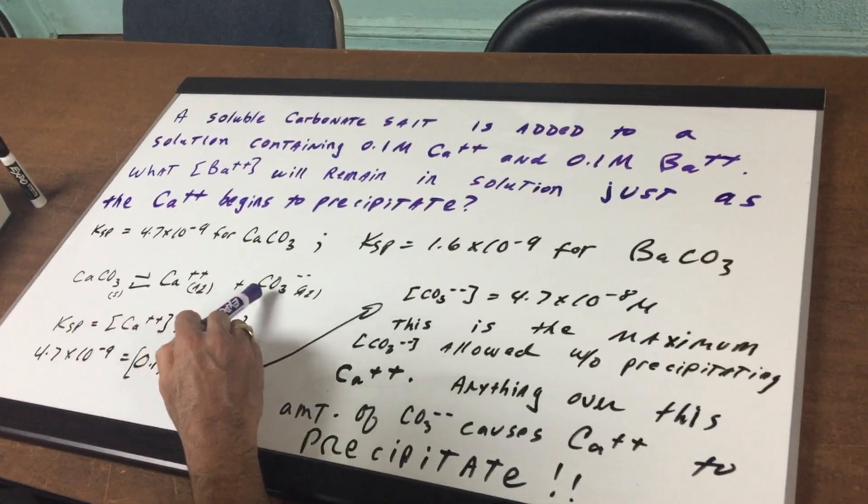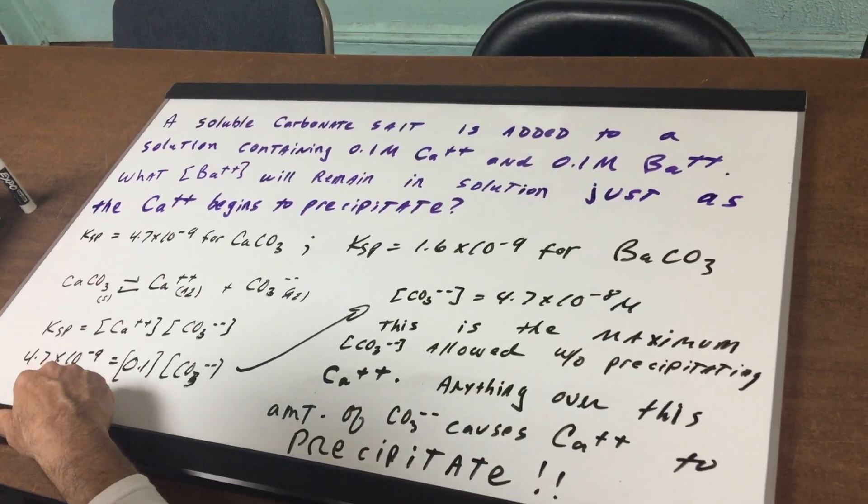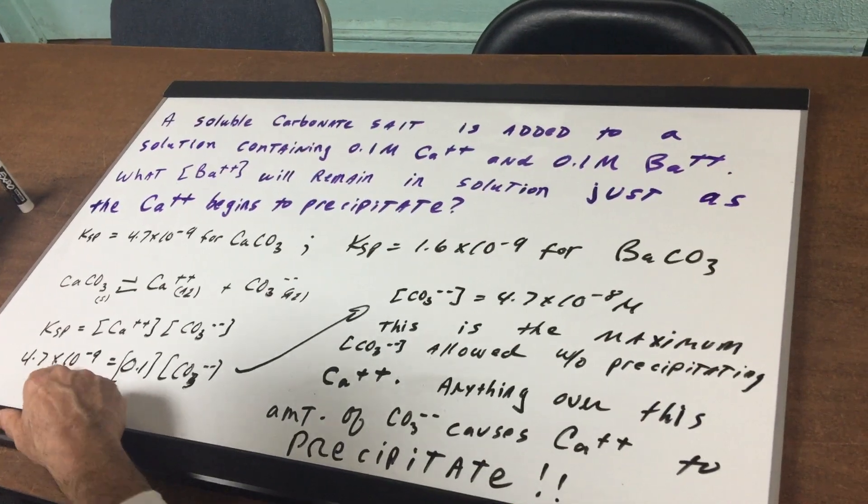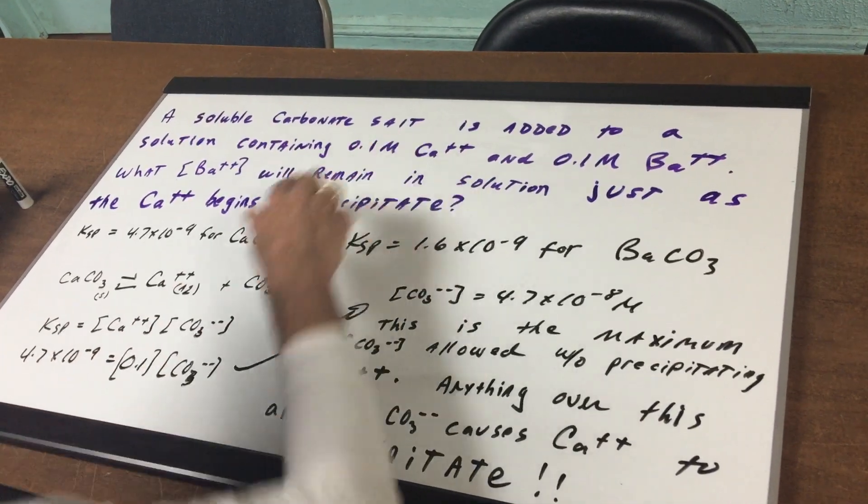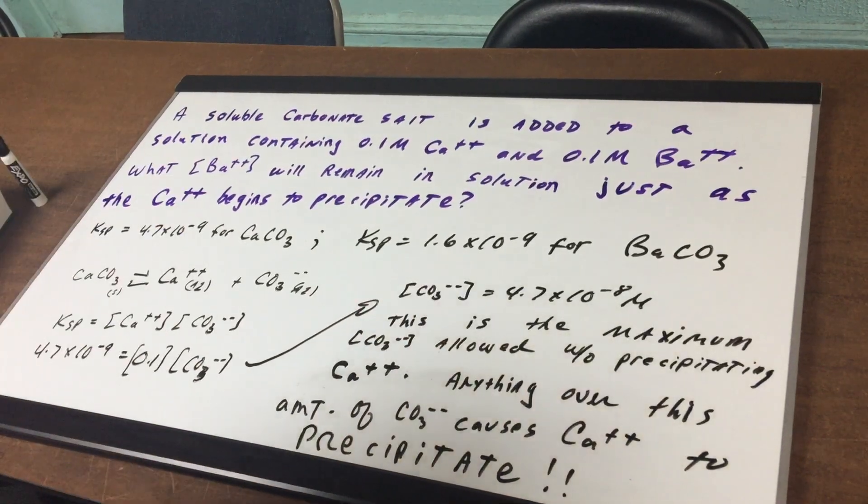It breaks into a mole of calcium and a mole of carbonate. We know the KSP for calcium carbonate. We know the concentration of calcium is 0.1 and I solve for the carbonate concentration.